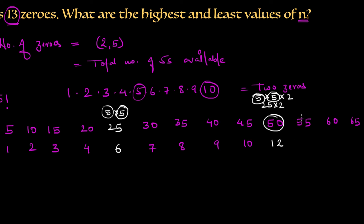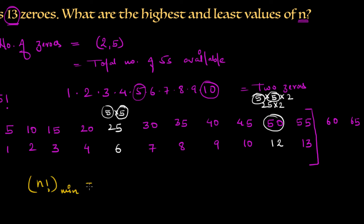Moving to the next multiple of 5, which is 55, this adds just one more 5, giving us a total of 13 zeros at 55 factorial. So the minimum possible value of n is 55, since 55 factorial is the first factorial to give exactly 13 zeros.